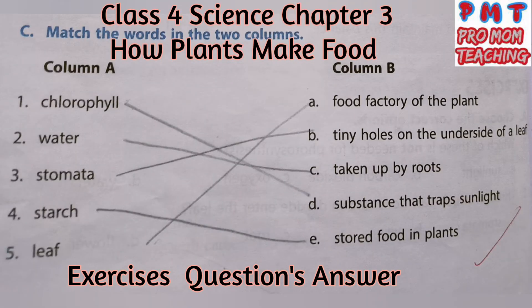Match the words in the two columns. First, chlorophyll – match with 'substance that traps sunlight'. Second, water – match with 'taken up by roots'. Third, stomata – match with 'tiny holes on the underside of a leaf'. Fourth, starch – match with 'stored food in plants'. Fifth, leaf – match with 'food factory of the plant'.